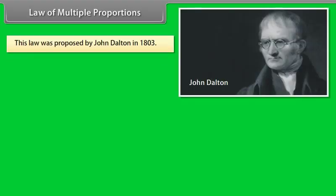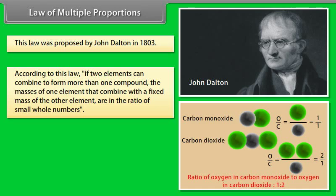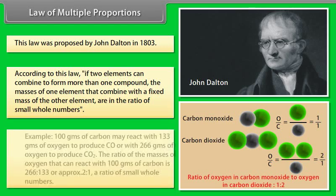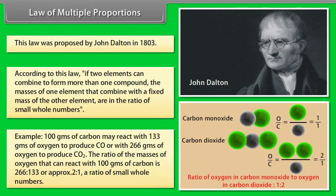Law of Multiple Proportions. This law was proposed by John Dalton in 1803. According to this law, if two elements can combine to form more than one compound, the masses of one element that combine with a fixed mass of the other element are in the ratio of small whole numbers. For example, 100 grams of carbon may react with 133 grams of oxygen to produce CO, or with 266 grams of oxygen to produce CO₂.